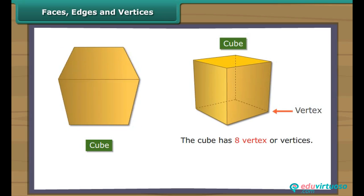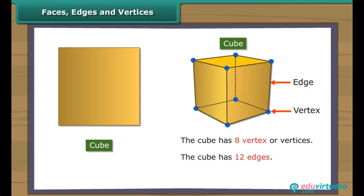A vertex or vertices is a point where two or more straight lines meet. An edge is a line segment that joins two vertex. A face is any of the plane or curved surface of a solid object.